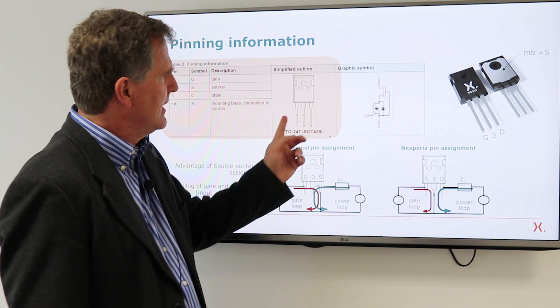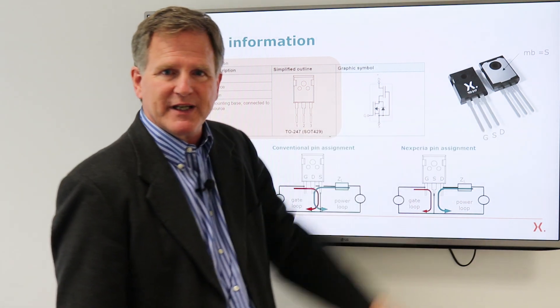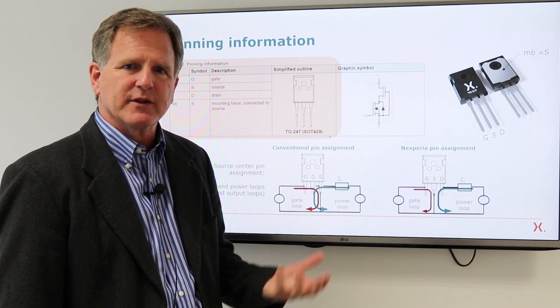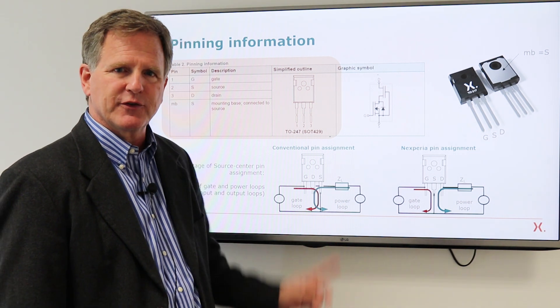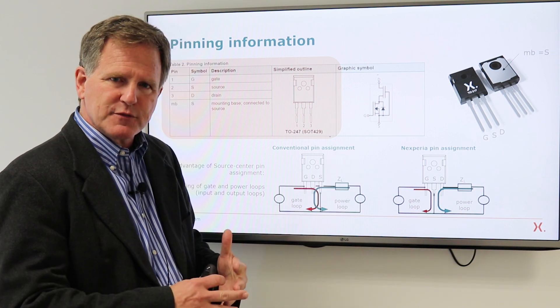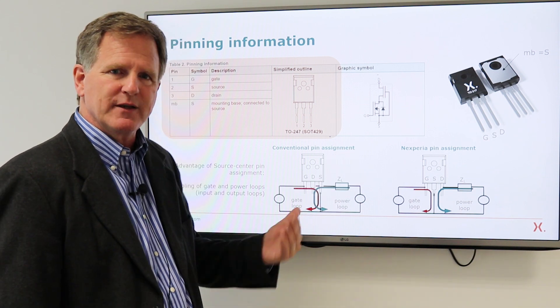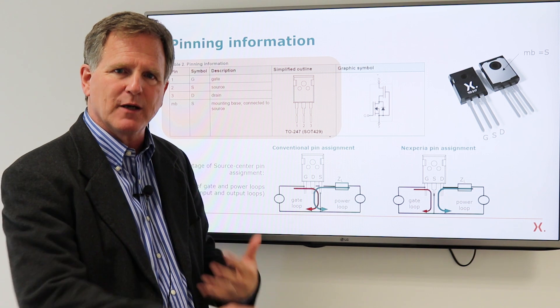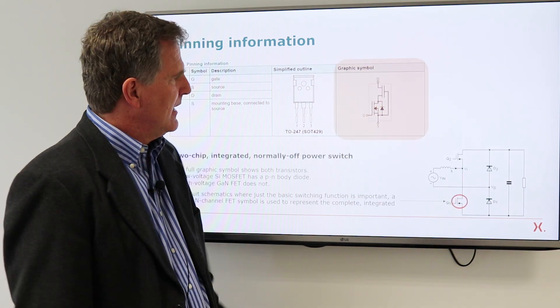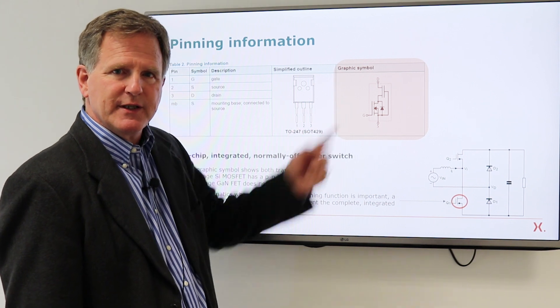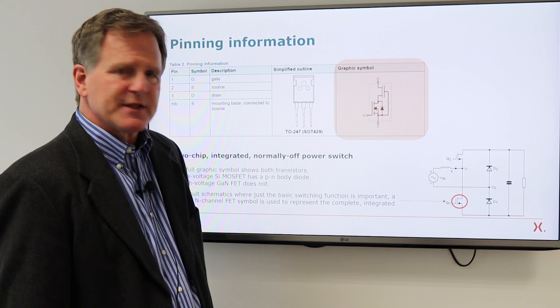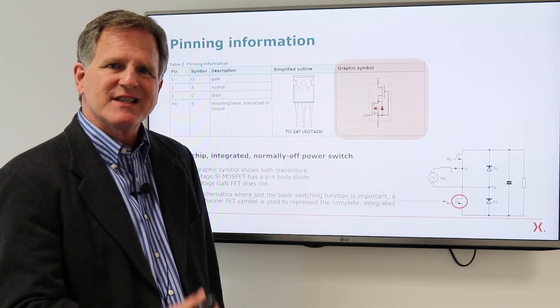The source is in the center and it's also connected to the mounting base, the tab on the back of the package. Conventionally with the IGBTs or MOSFETs, this would be the drain or the collector. The reason we do that is to make it easy for you to separate the input and the output loop to decouple the two, which is important for a high-speed switch.